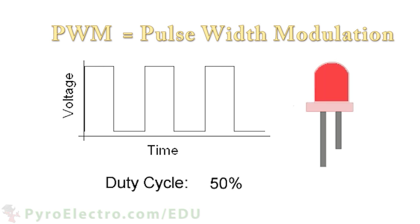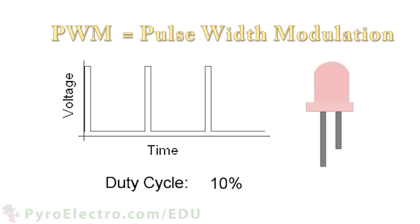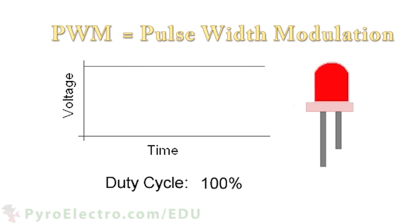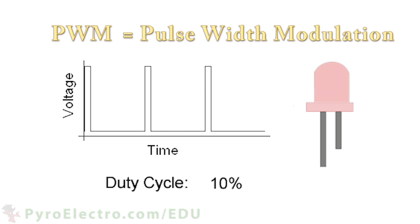So with that information in hand, let's make a cyclops eye with five LEDs, where one bright LED moves back and forth.